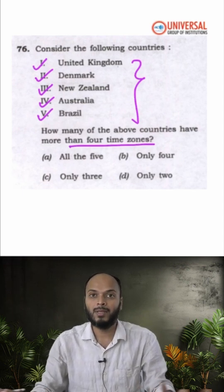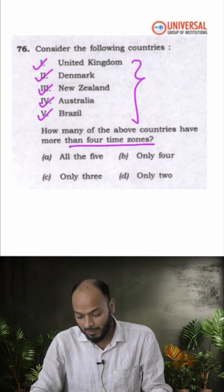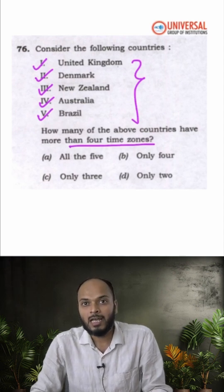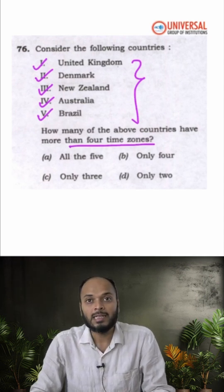Reason being, they are very big in terms of their longitudinal stretch, or their longitudinal stretch is huge. But apart from it, some countries have more than four time zones. Reason being, they still have some territories in other parts of the world. For example, UK still has it.